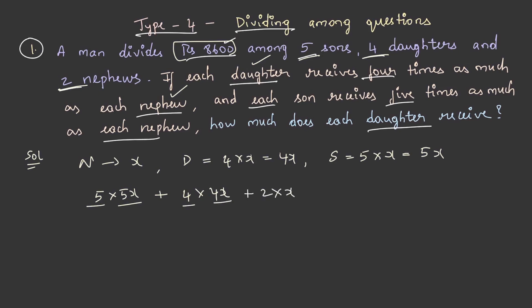This is what we have assumed and we equate this to 8600. I am solving this: 25x plus 16x plus 2x is equal to 8600, and this becomes 43x equal to 8600. Finally, x will be 200.